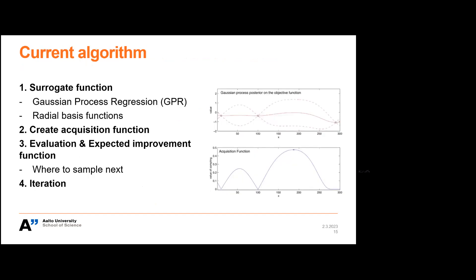And then what we are currently doing is where should I measure next to find the material that for example has the highest yield strength. So basically we have a surrogate function that is a Gaussian process regressor. It uses radial basis functions. Then we create an acquisition function from that. And then we evaluate what is the next measurement point that we want to measure. And then we iterate this process.